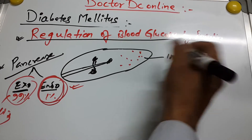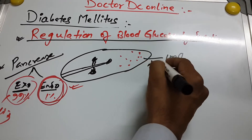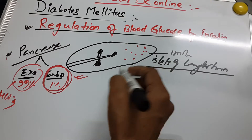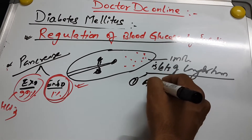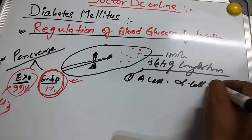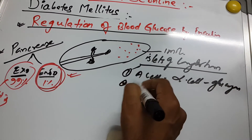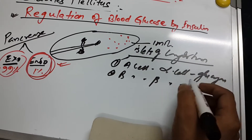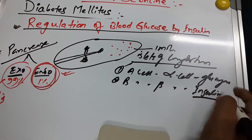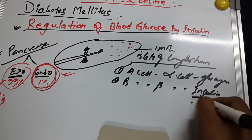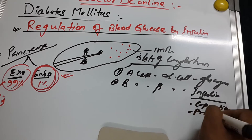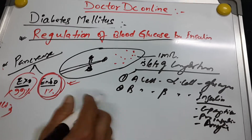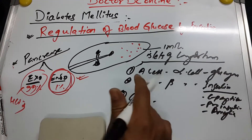The endocrine portion contains about 1 million small islets of Langerhans. These islets are classified into cell types: alpha cells, which secrete glucagon; and beta cells, which secrete insulin, as well as C peptide, proinsulin, and amylin.